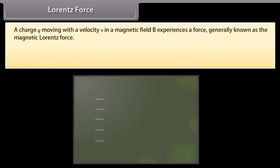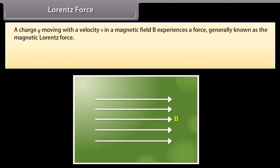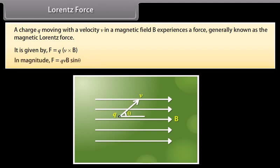A charge Q moving with a velocity V in a magnetic field B experiences a force generally known as the magnetic Lorentz force. It is given by F equal to Q into the cross product of V and B. In magnitude, F is equal to QVB sinθ.